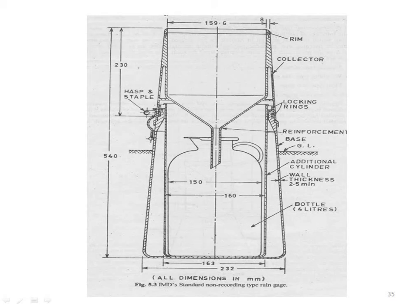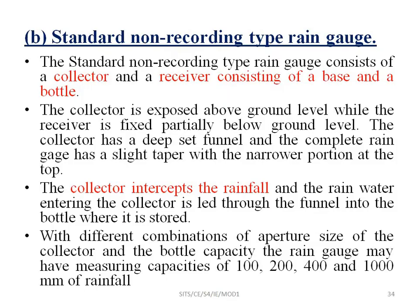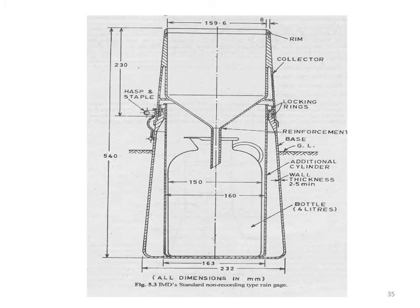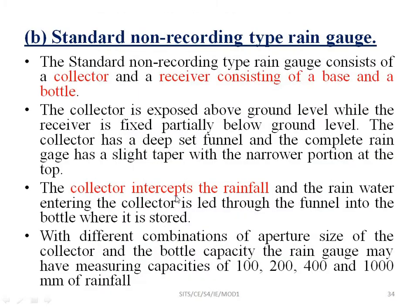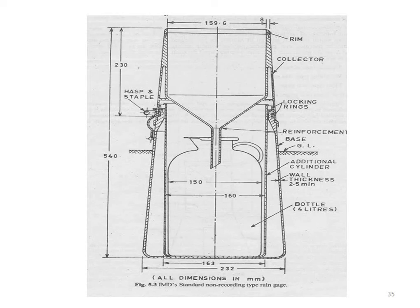The standard non-recording type rain gauge consists of a collector and a receiver. The receiver consists of a base and a bottle. The collector is exposed above ground level while the receiver is fixed partially below ground level. The collector has a deep-set funnel and the complete rain gauge has a slight taper with a narrower portion at the top. The collector intercepts the rainfall and the rainwater is led through the funnel into the bottle where it is stored.